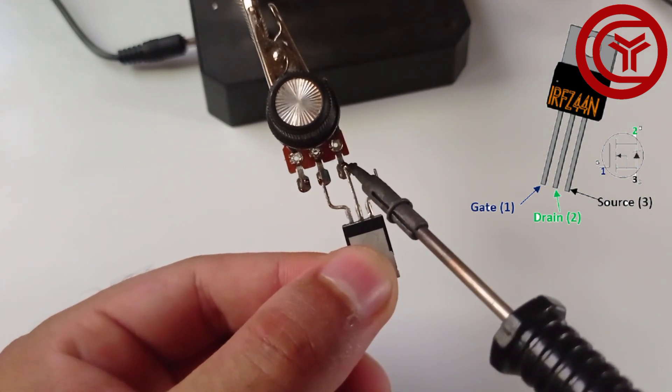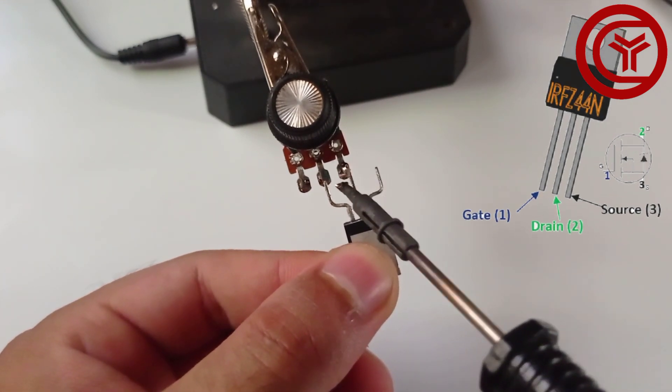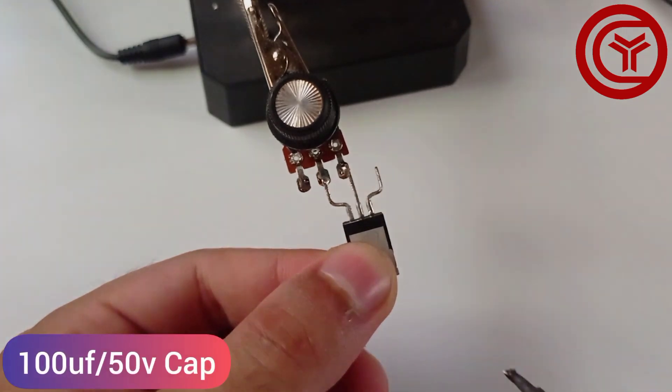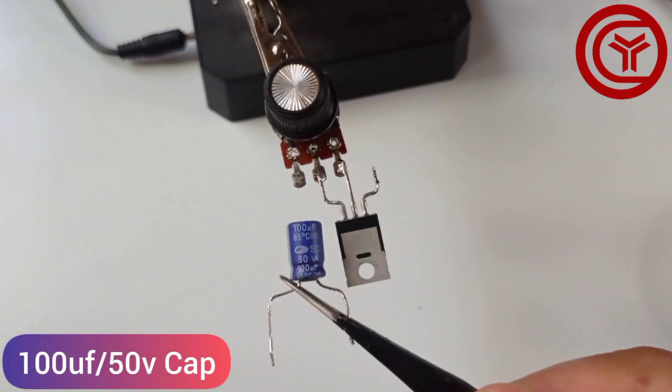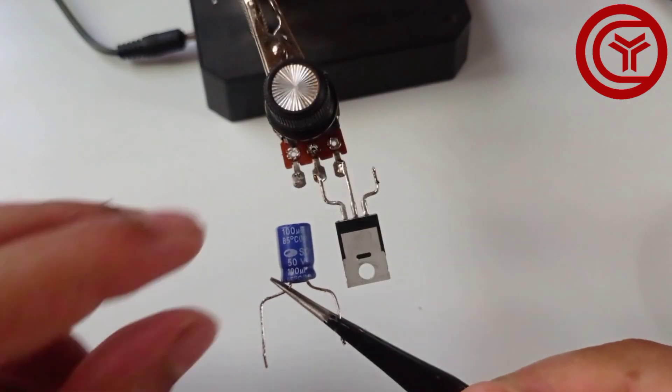Solder MOSFET gate and drain pins with potentiometer 2nd and 3rd pins. Also we need a 100UF electrolytic capacitor.